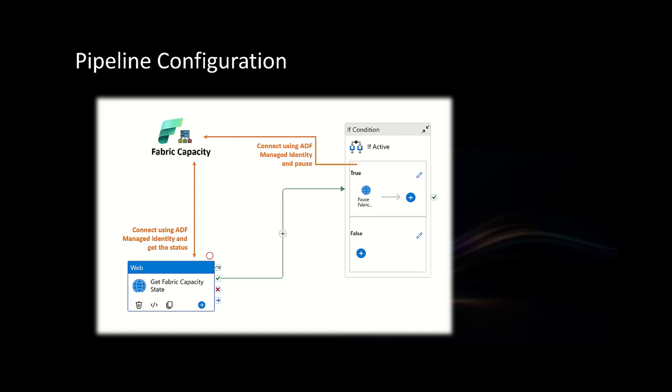Once that is configured, you can have the web activity for checking the state of the capacity. Once you know the state, there can be two outputs: active or paused. If you get the return value as active, which means the capacity is up and running, then you call the suspend API. If you are creating a pipeline for resuming the capacity, you check the state, and if the state is paused, then you call the resume API. That's what you have to do in order to automate this. Let me open my Azure environment and show you the way of configuring all of these things, but first I'll show you the API reference page.